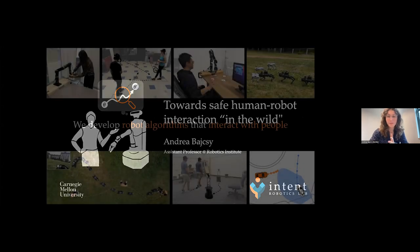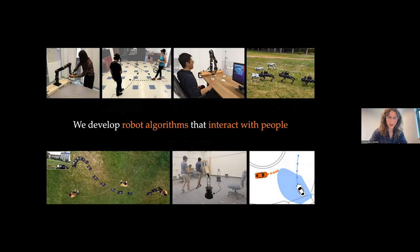So in my lab, we develop robot algorithms that interact with people. This includes autonomous cars driving around human-driven cars to quadrotors flying nearby pedestrians, assistive robots helping you out in the home, or robotic dogs that play a game of tag with you on your lawn.